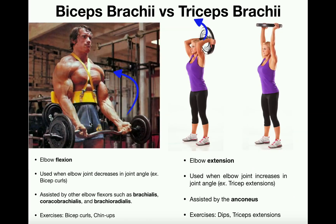Here's a look at an exercise that utilizes the biceps brachii, which are sometimes called the 'Arnold Schwarzenegger muscle' because former Mr. Olympia Arnold Schwarzenegger had very prominent biceps. This is the bicep curl — taking a barbell and curling it upward so the joint angle of the elbows decreases. Another exercise facilitating elbow flexion is chin-ups; when you chin yourself up toward the bar, your elbows are also decreasing in joint angle, performing elbow flexion whether you realize it or not.